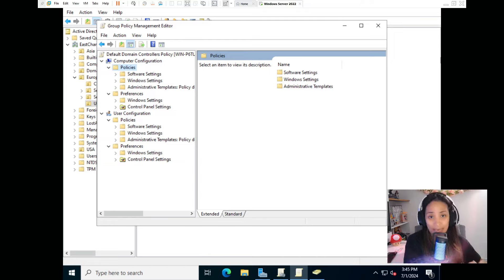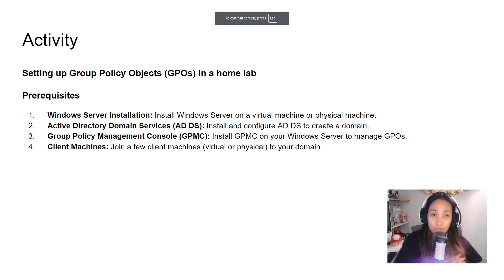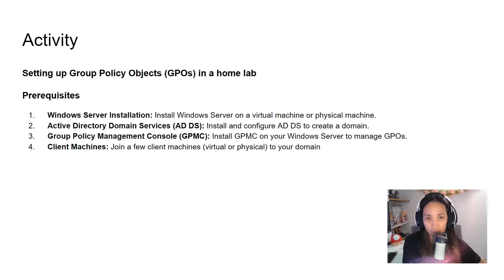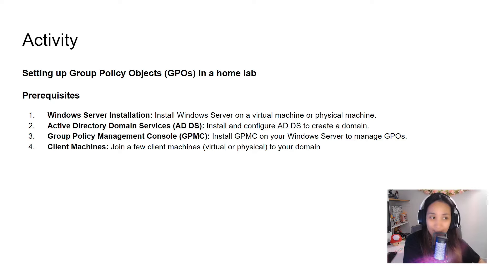I hope you now understand the differences between the different configurations and types of settings in group policies. For our activities, we are going to create five different GPOs. These are basic GPOs just to get started. In an enterprise, you'll create more complex and advanced GPOs, but for now we're sticking with the basics so you will have a good foundation on how to create GPOs and best practices for implementing them.